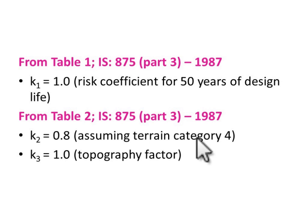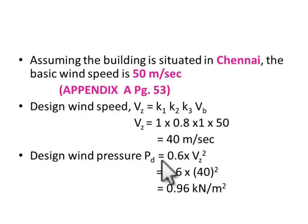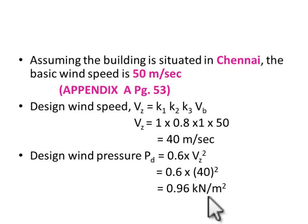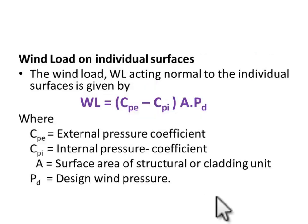The structure is situated in Chennai in a plain area, so terrain category 4 gives k2 = 0.8. The topography factor k3 is taken as 1.0. The basic wind speed from the wind map of India, from Appendix A, page 53 of IS 875 Part 3, is Vb = 50 m/s. Therefore the design wind speed Vz = 1.0 × 0.8 × 1.0 × 50 = 40 m/s. The design wind pressure is 0.6 × Vz² = 0.6 × 40² = 0.96 kN/m².